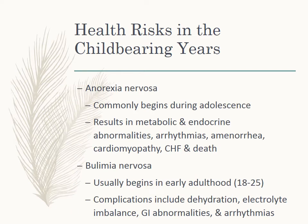Anorexia commonly begins during adolescence. It is a psychological disorder — if not corrected, significant complications of arrhythmias, amenorrhea, cardiomyopathy, and CHF occur, and in any extreme variant it can lead to death. It results in metabolic and endocrine abnormalities.